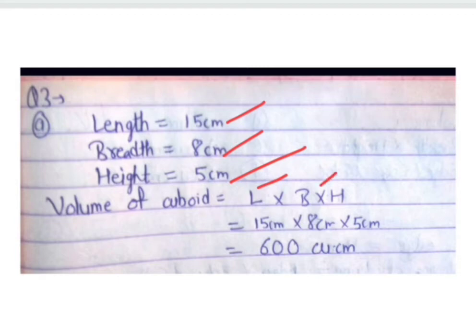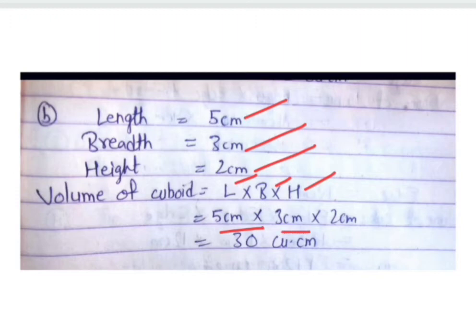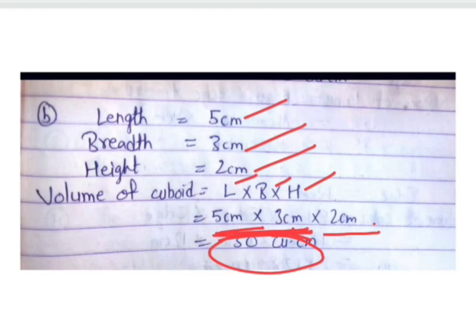In part A, length is 15 cm, breadth is 8 cm, height is 5 cm. Volume = 15 × 8 × 5 = 600 cubic centimeters. In part B, length is 5 cm, breadth is 3 cm, height is 2 cm. Volume = 5 × 3 × 2 = 30 cubic centimeters.